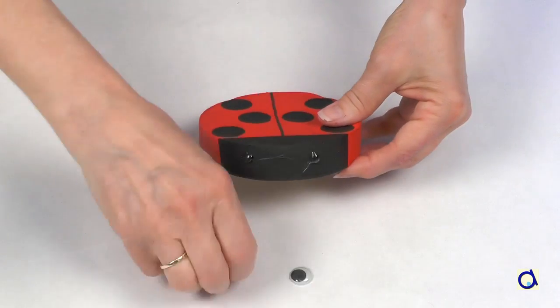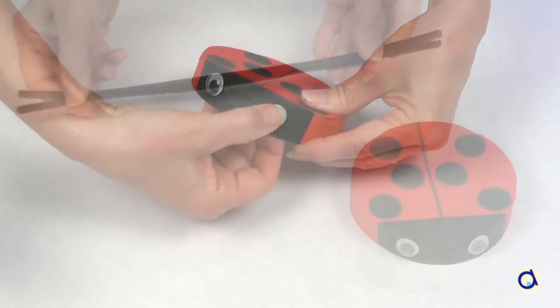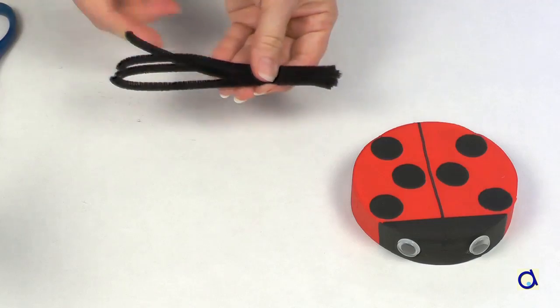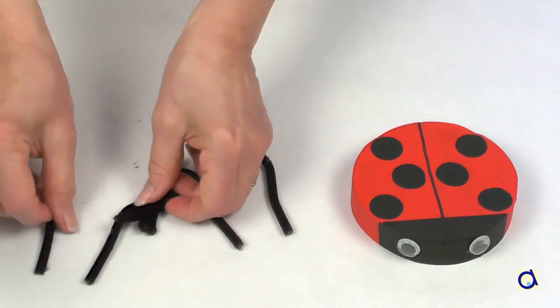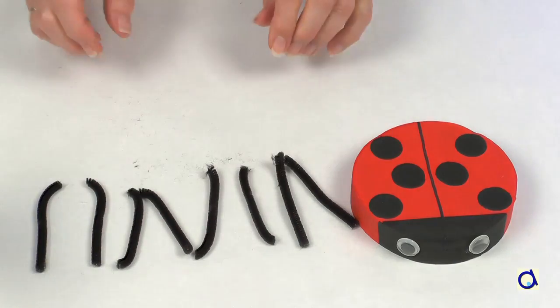Glue two googly eyes to the front of the head with a glue gun. Take two black pipe cleaners and cut them in two. Then take the four half pipe cleaners and cut them in half again. You now have eight pieces.